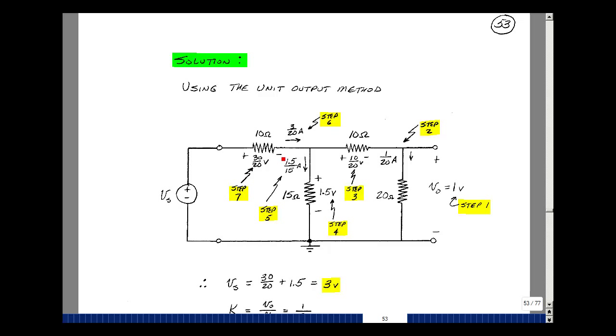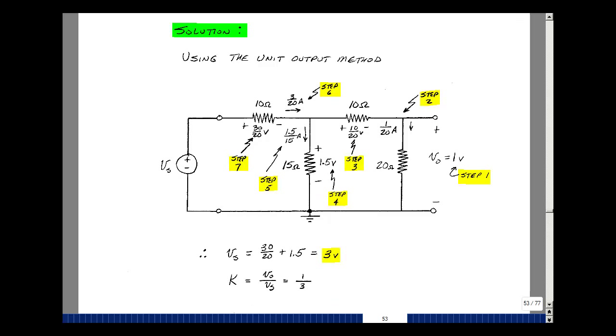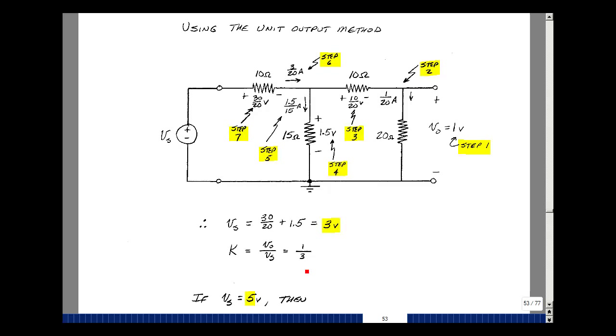So now I have the voltage here: 1 and a half volts plus the voltage here, which is 1 and a half volts, so I get 3 volts. So the ratio of the output to the input, when the output is 1, is 1/3.